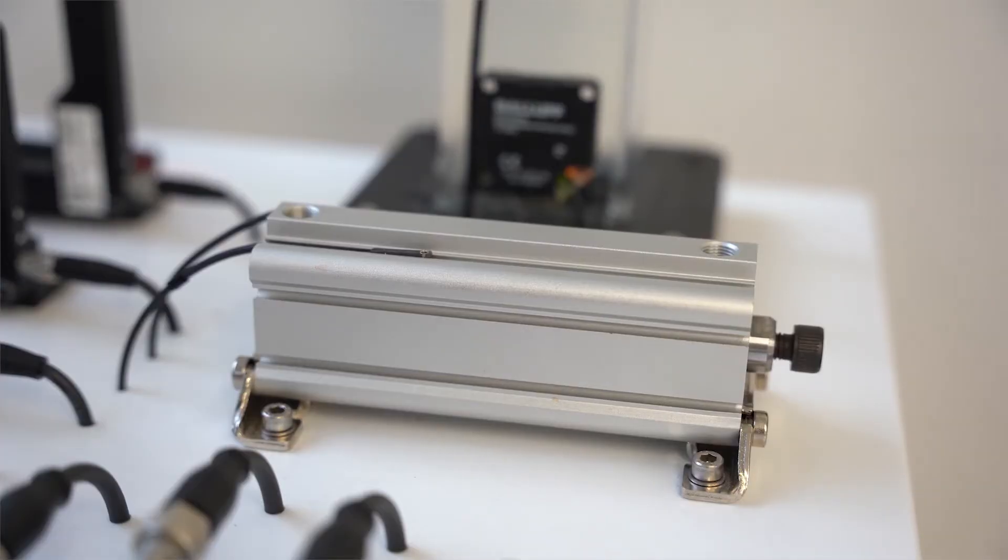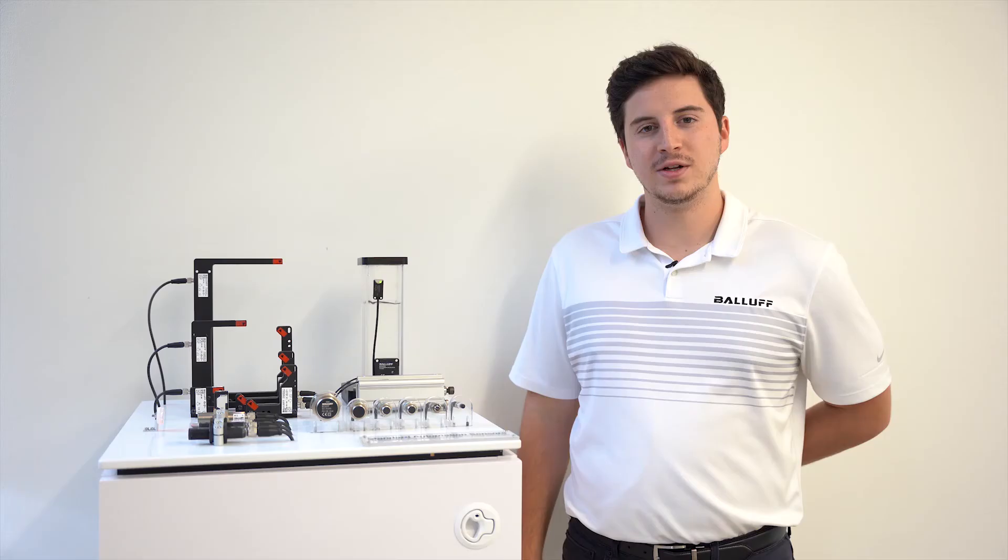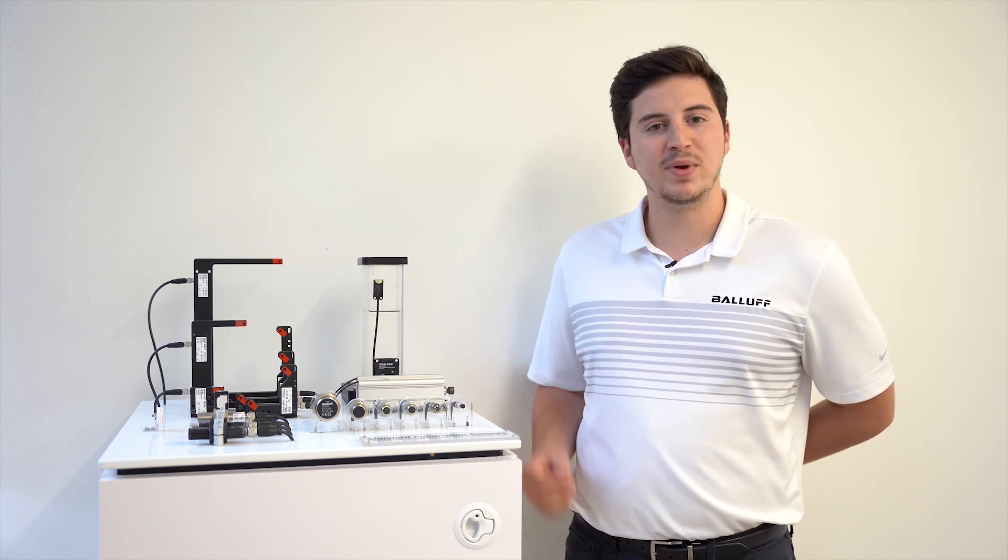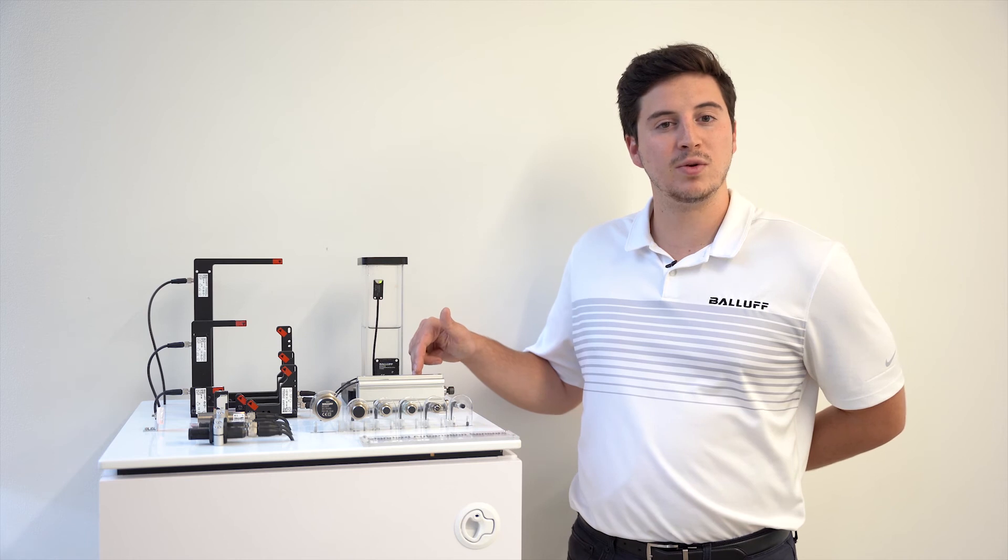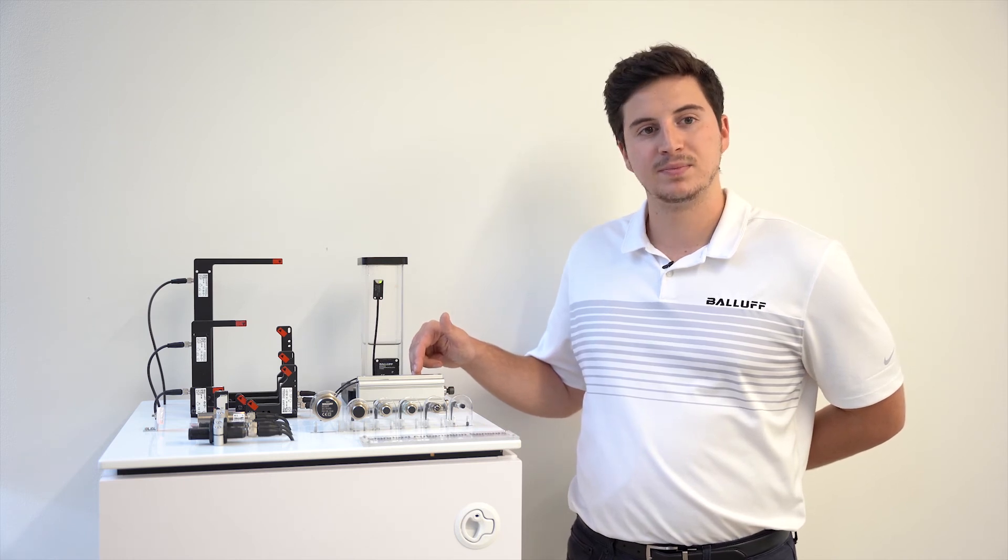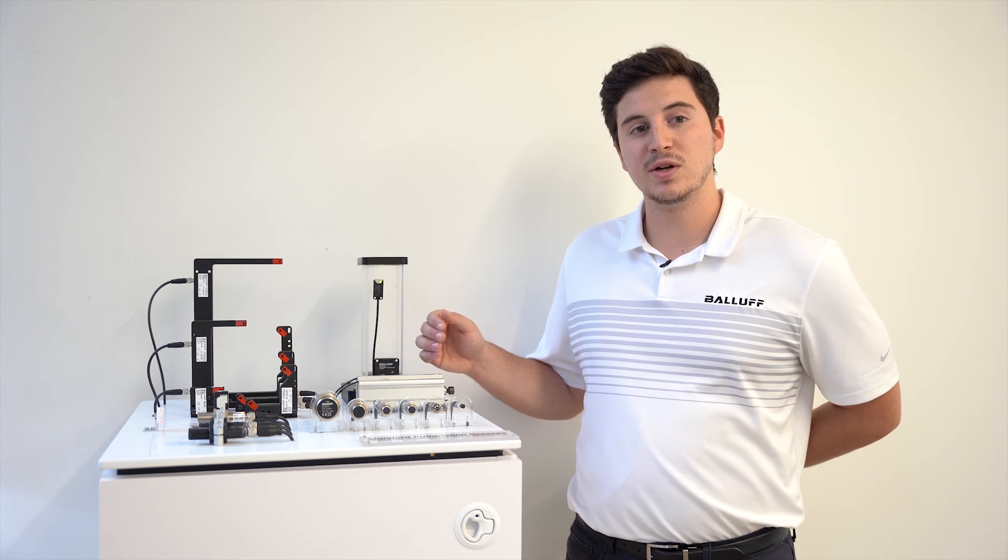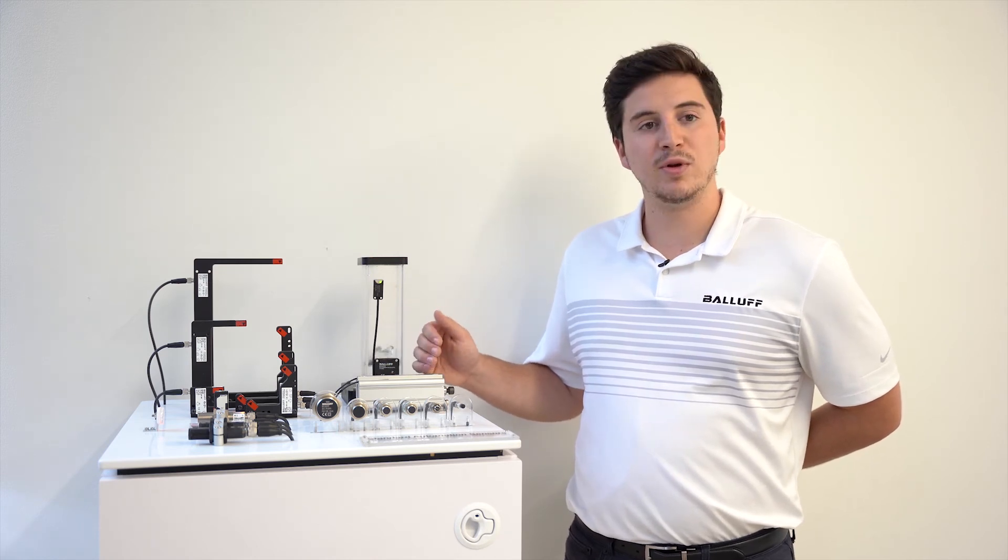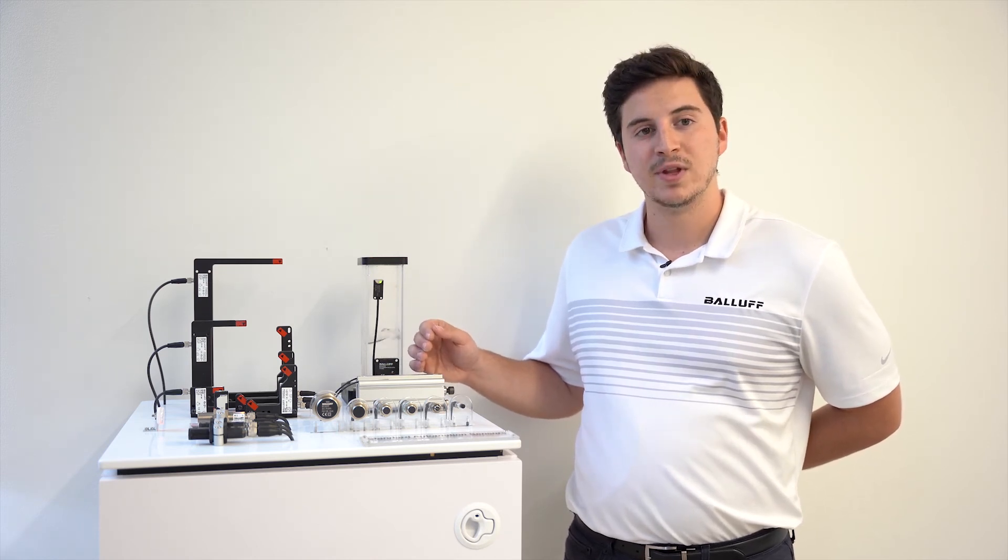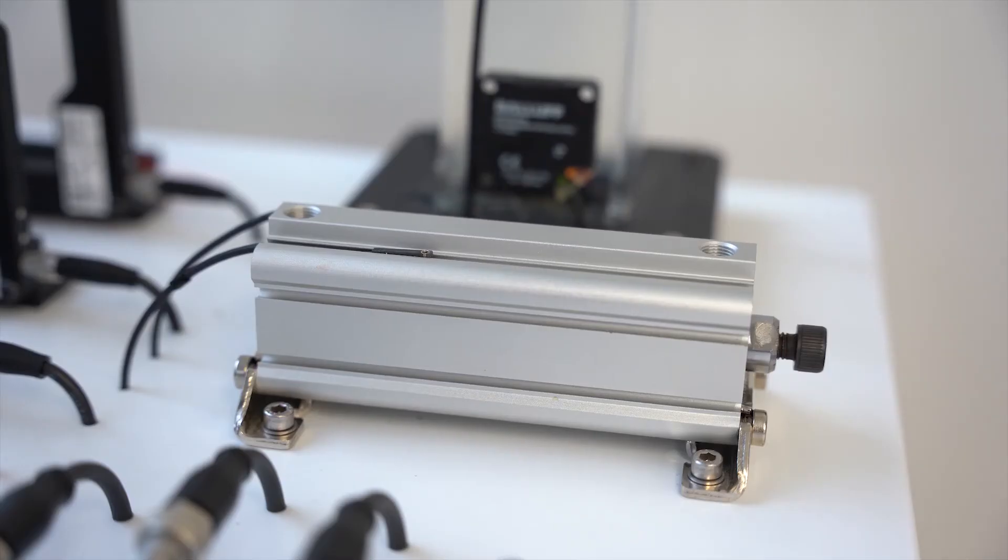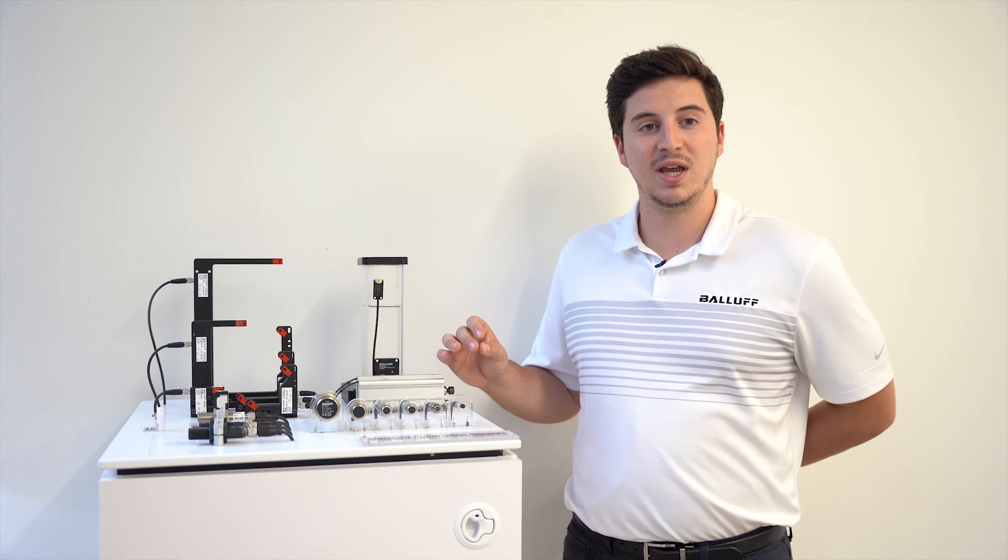Shown here is a short-stroke cylinder demoing Ballif's magnetic field sensor. Magnetic field sensors detect piston position through the cylinder wall of a pneumatic cylinder. These magnetic field sensors are designed for a C-slot cylinder, but they're also available in T-slot form factors. What's great about them is they mount flush with the cylinder, making them great for space-critical applications.